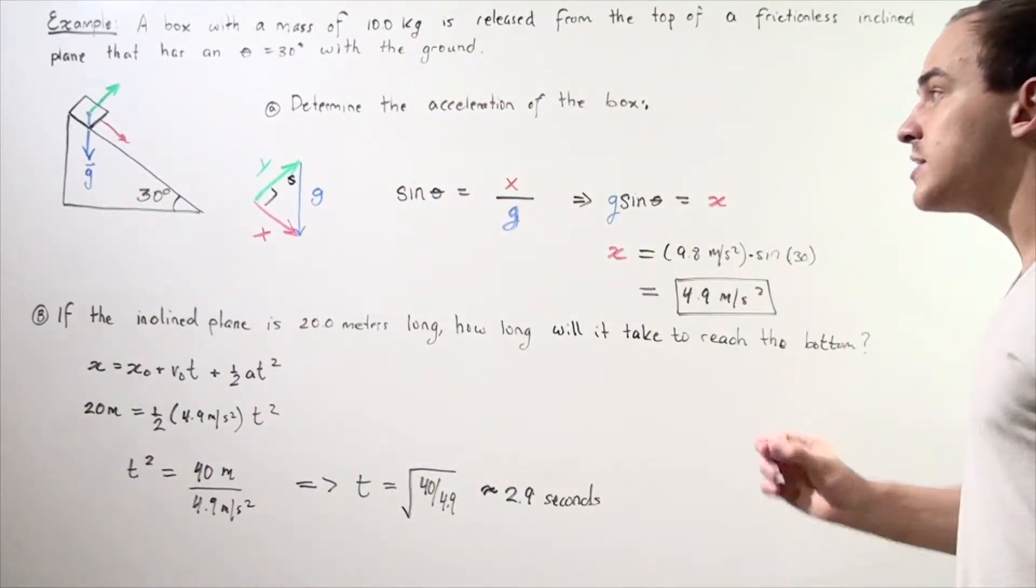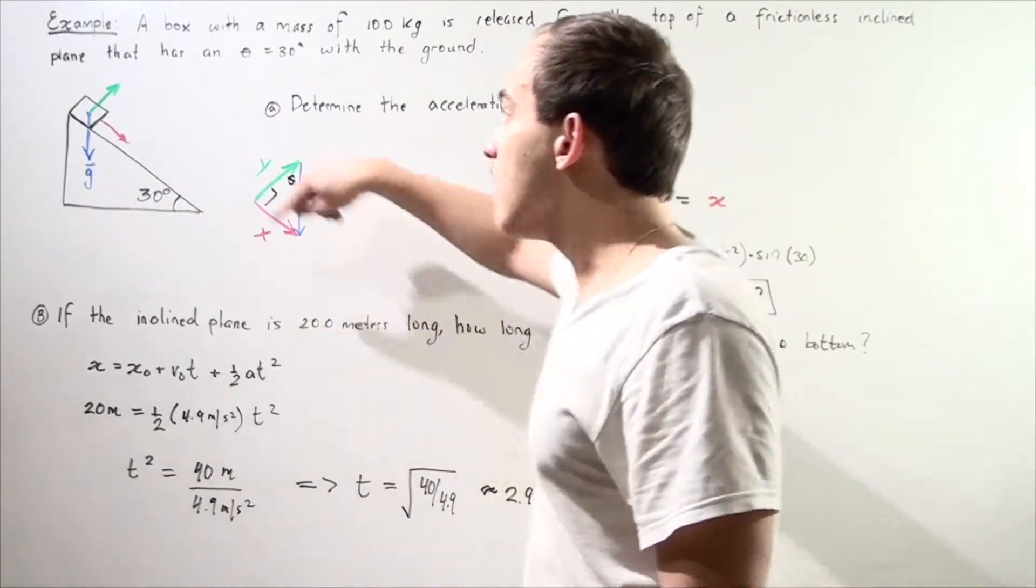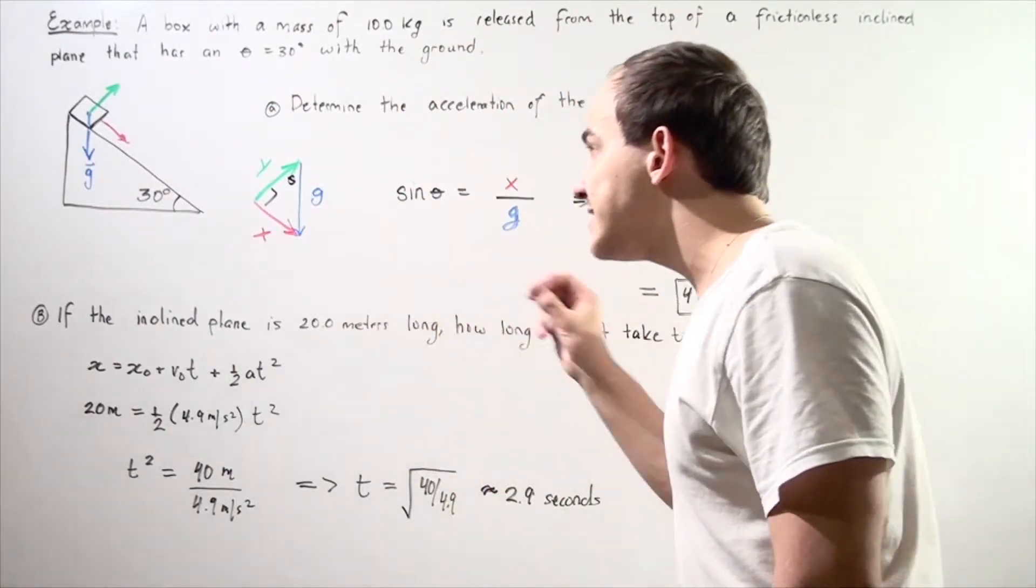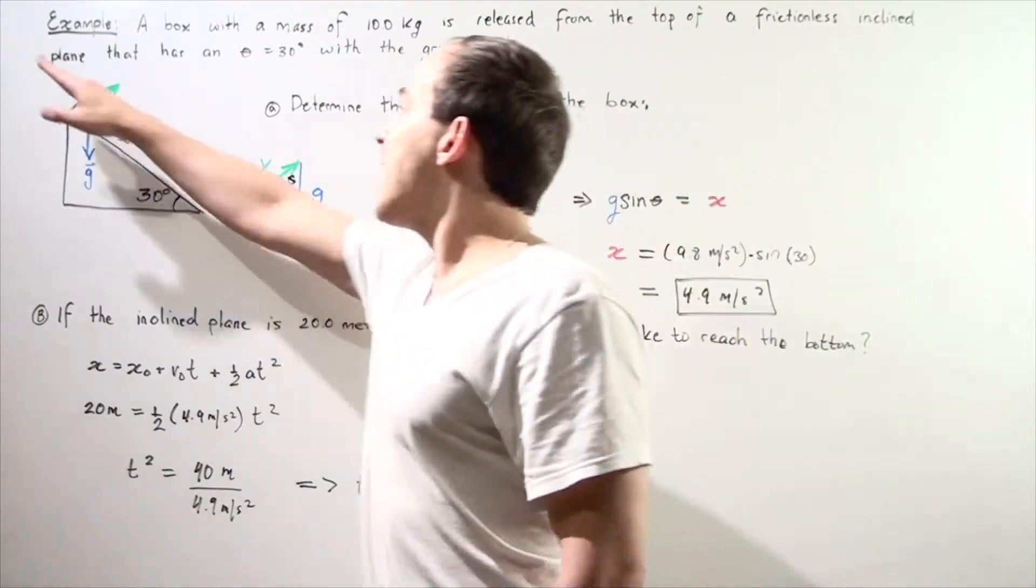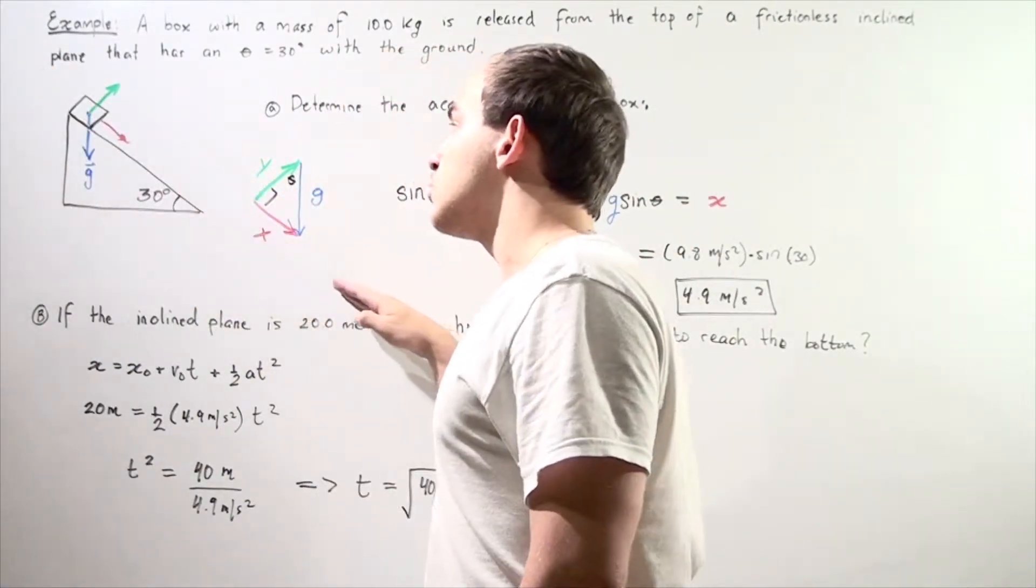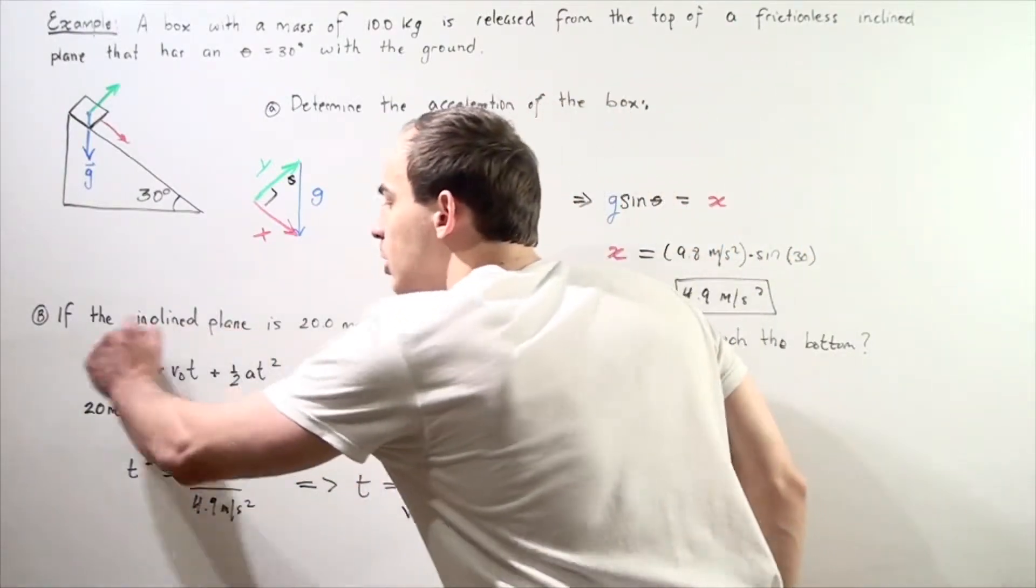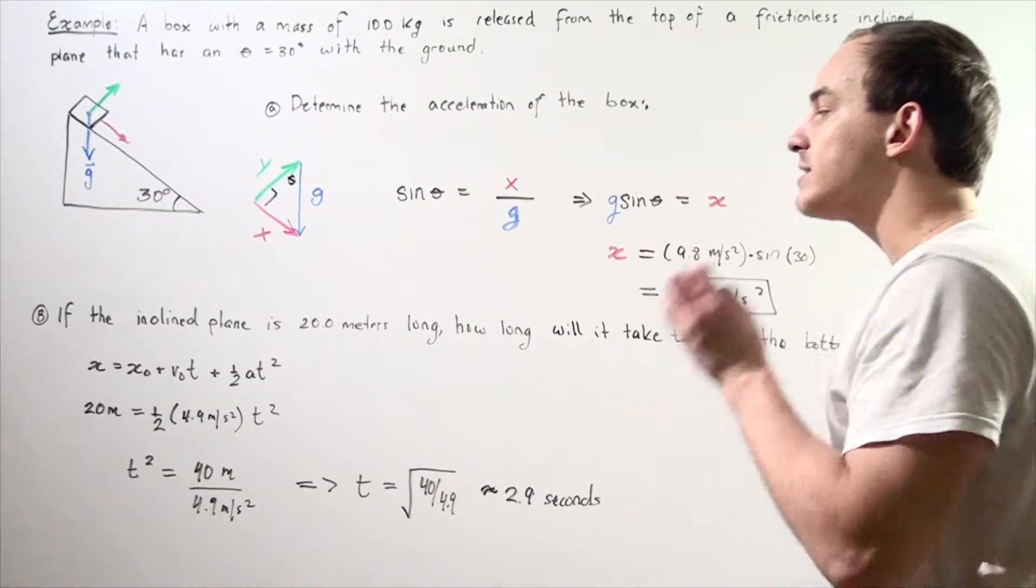We know what our acceleration is, and in part B, we're given that the length of this surface of the inclined plane is 20 meters. So because we chose the x-axis to lie parallel to our inclined plane surface, we can use the following kinematics equation to solve for our time.